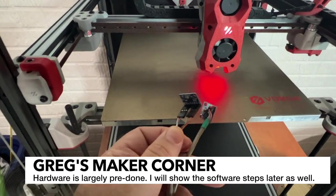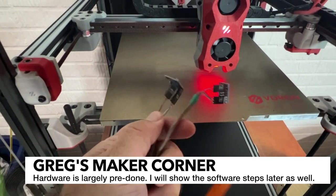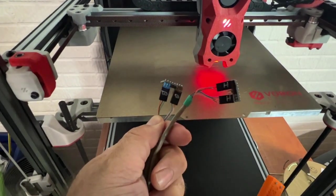If you have a bed slinger like the Switch Wire you can also mount one of these to the bed and one to the hot end. And they're even labeled one as H and one as B.